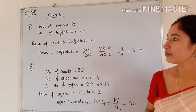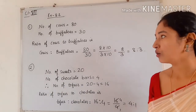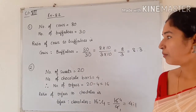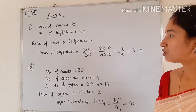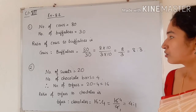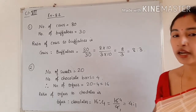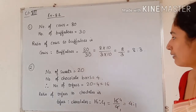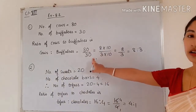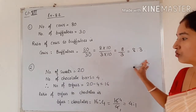In question number 1, the number of cows and the number of buffaloes are given. We have to find the ratio of cows to buffaloes. The ratio is 80 by 30. Since 10 is a common factor in both 80 and 30, we cancel it out, and we get 8 by 3, that is 8 is to 3.